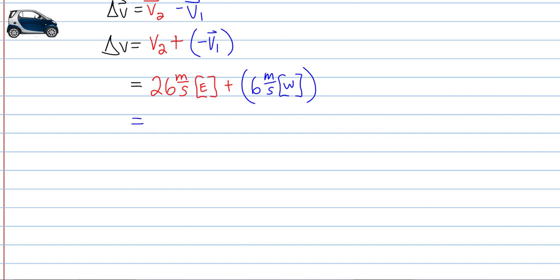You know the rules for adding vectors. You cannot add vectors directly that have different directions. You must ensure they have the same direction. So, we simply call this, plus 26 meters per second to the east, plus negative 6 meters per second to the east.